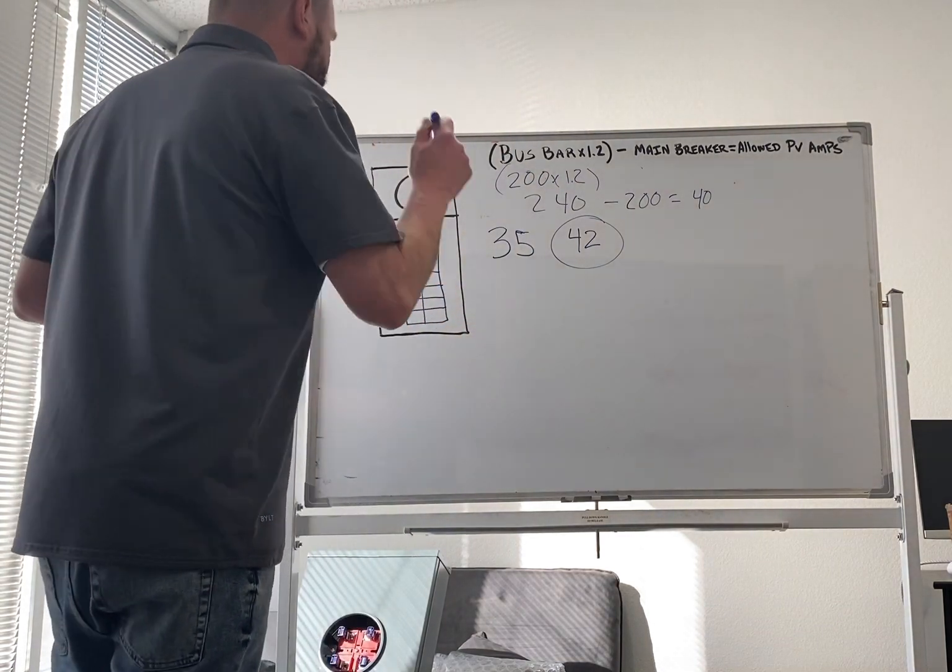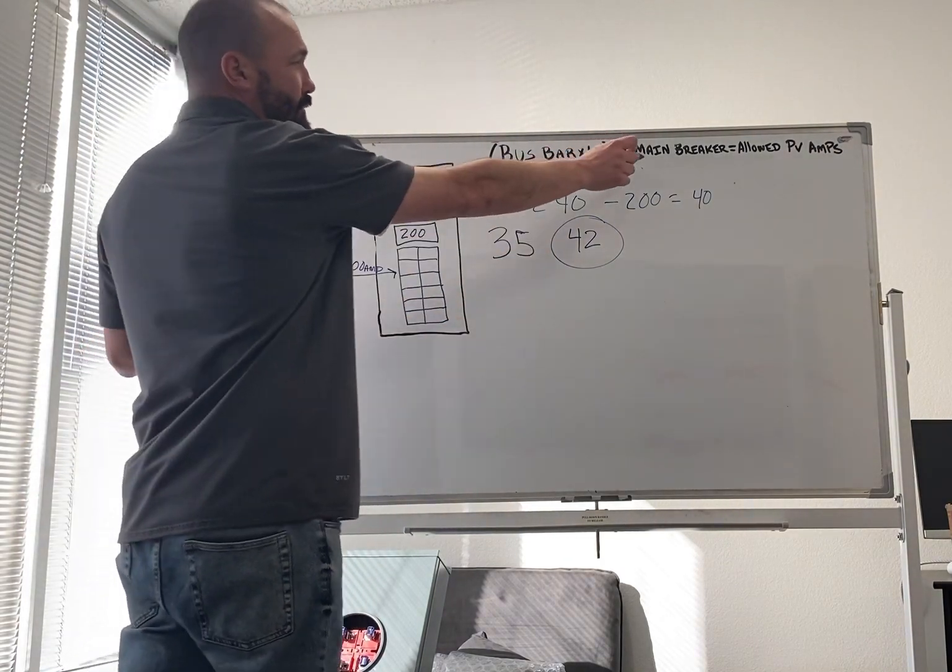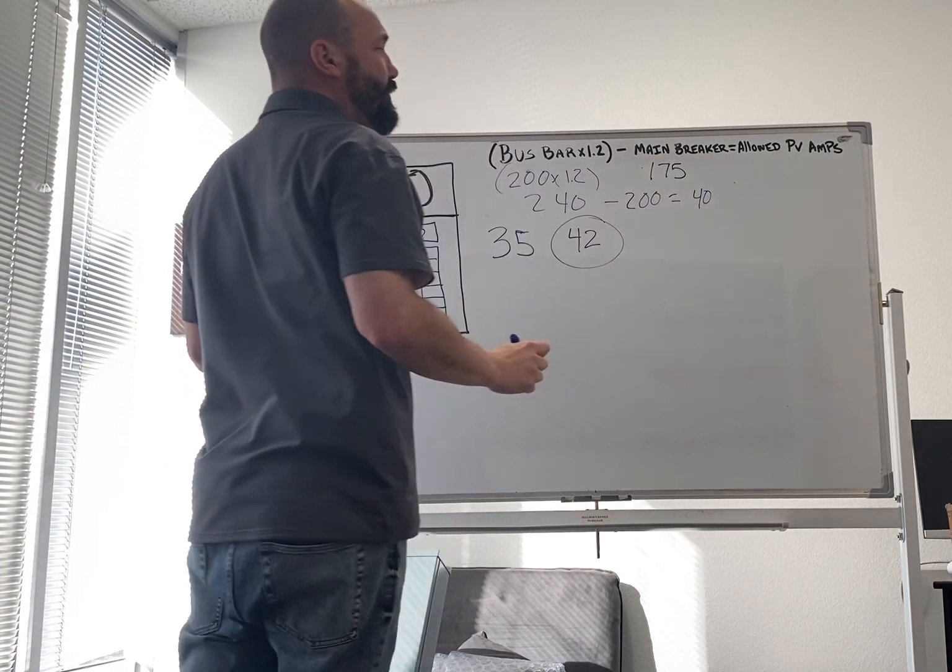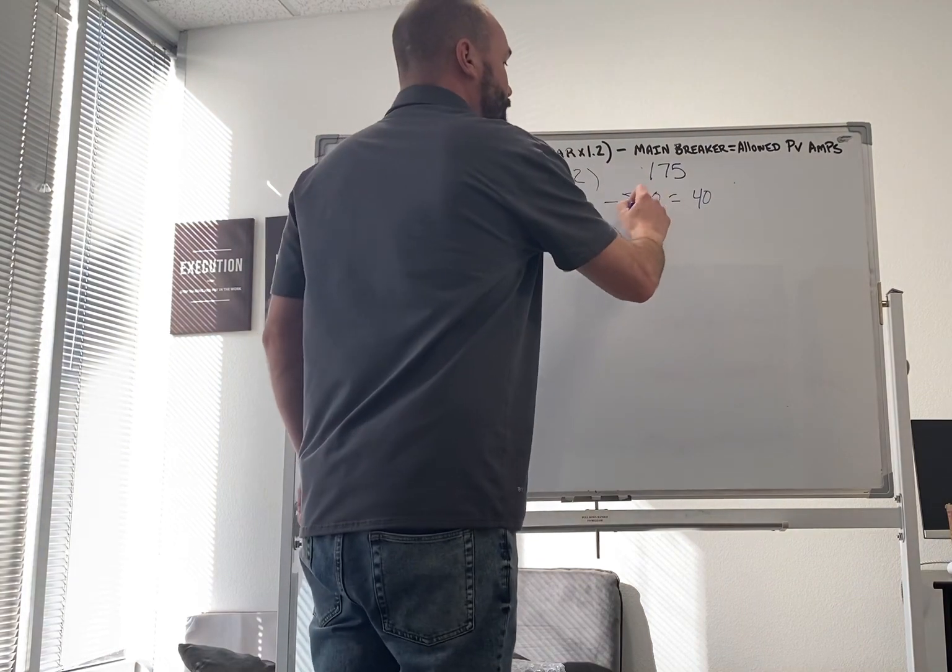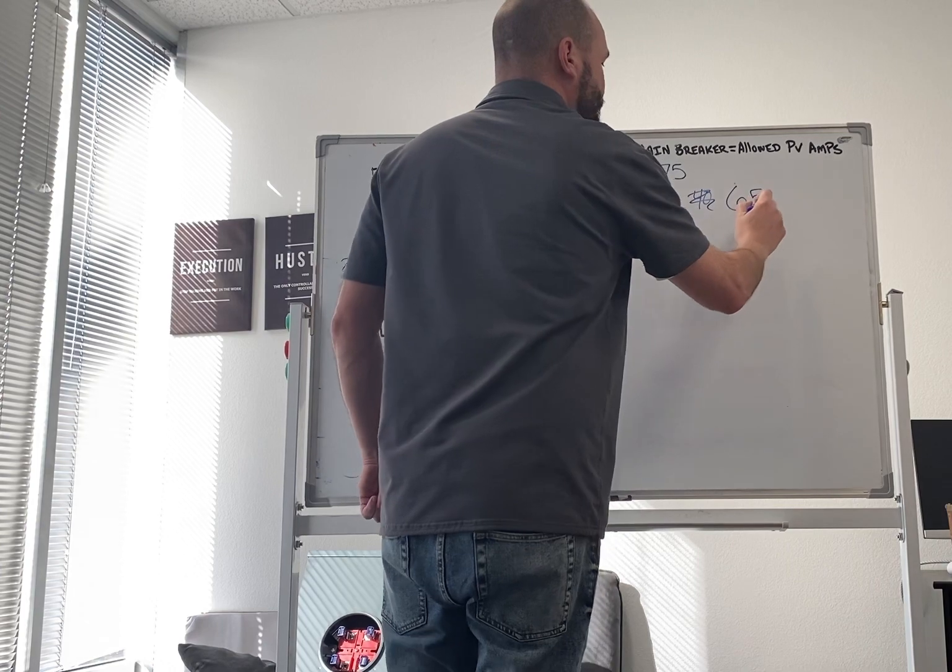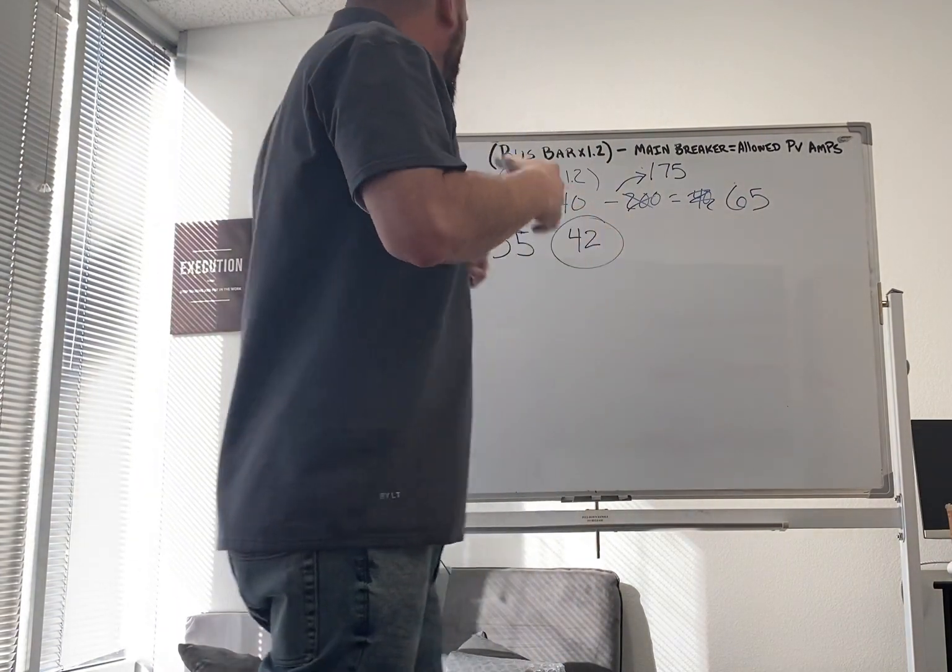So what I can do is mess with this equation a little bit. So if I take that main breaker and I derate that down to a 175, well, now I'm 240 minus 175 equals 65 amps. Now I'm allowed to backfeed 65 amps. And why is that?